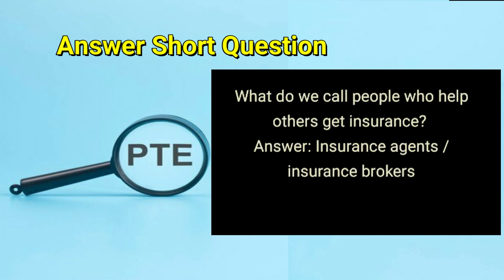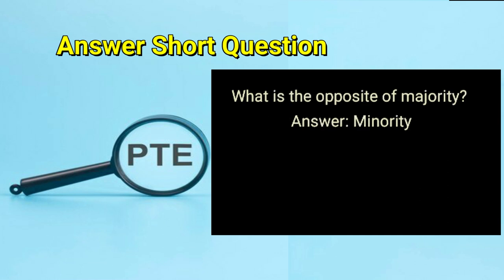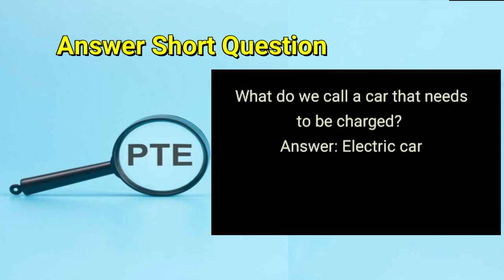What do we call people who help others get insurance? Answer: insurance agents or insurance brokers. What is the opposite of majority? Answer: minority. What do we call a car that needs to be charged? Answer: electric car.